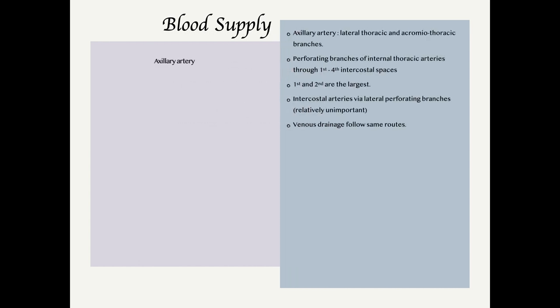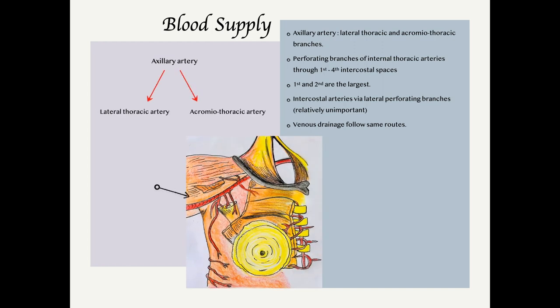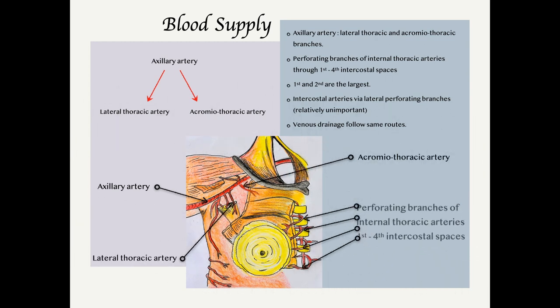Blood supply to the breast is provided by the axillary artery through its lateral thoracic and acromiothoracic branches, and the perforating branches of the internal thoracic arteries through the first to fourth intercostal spaces. The first and second perforators are the largest of these branches. Blood supply from the intercostal arteries and their lateral perforators are a relatively unimportant source.